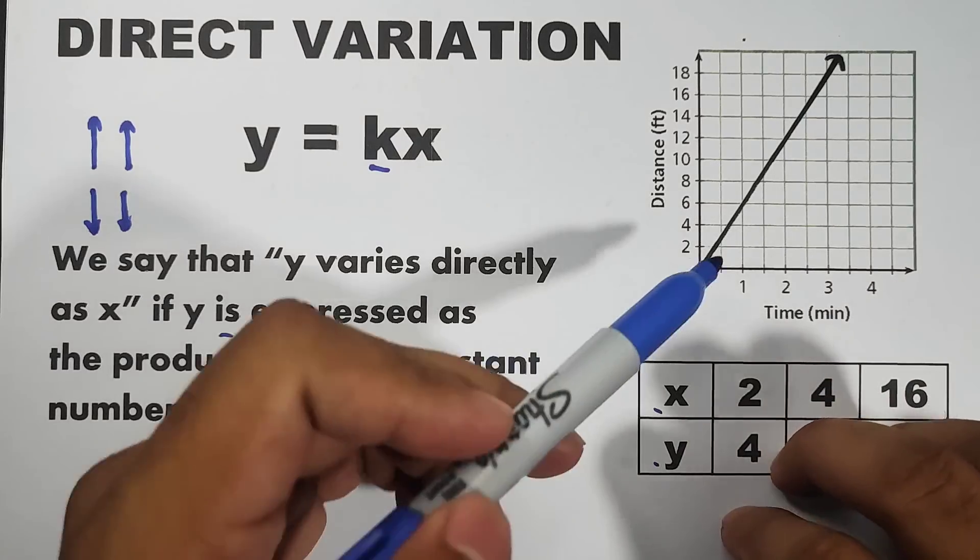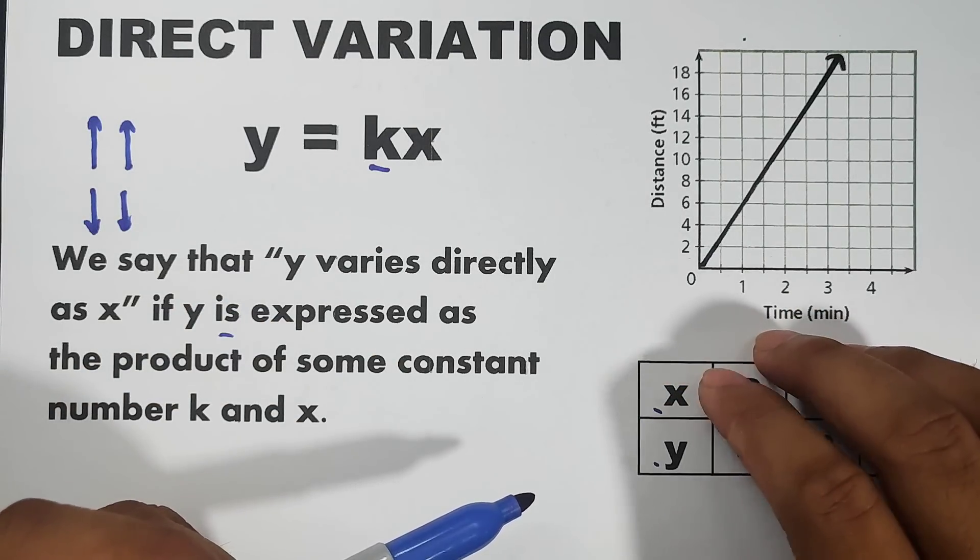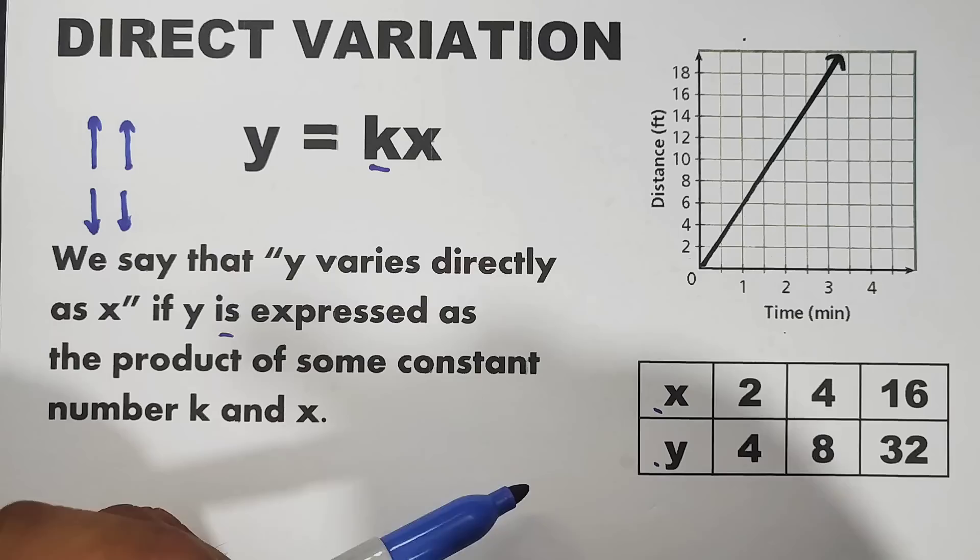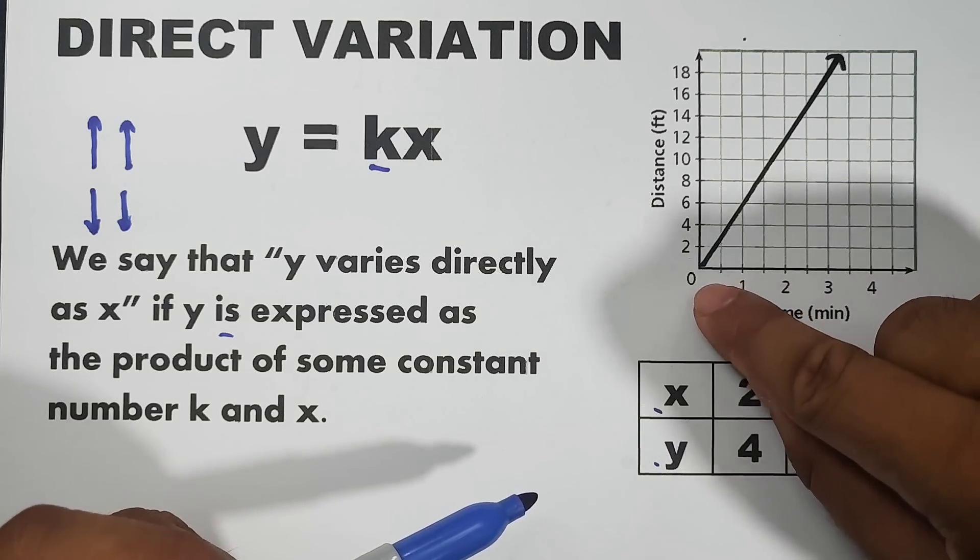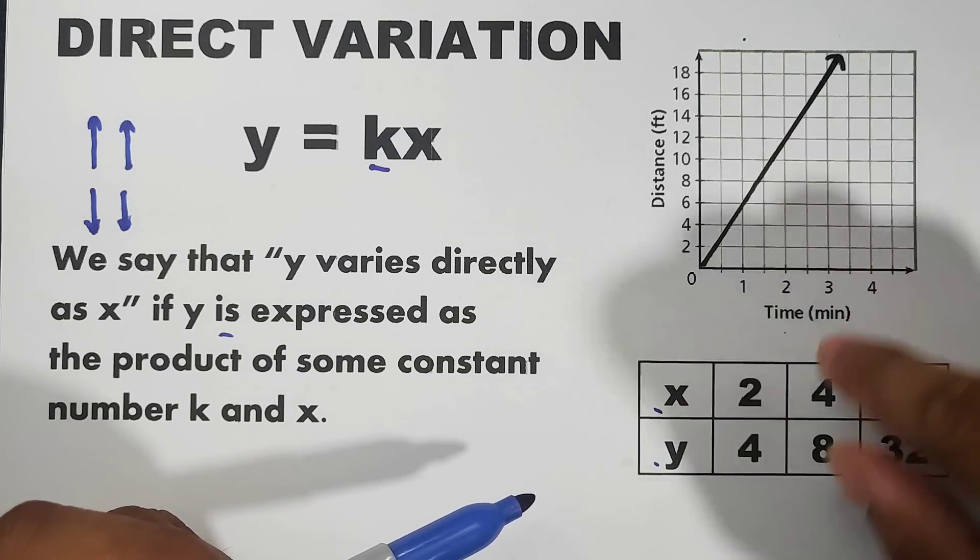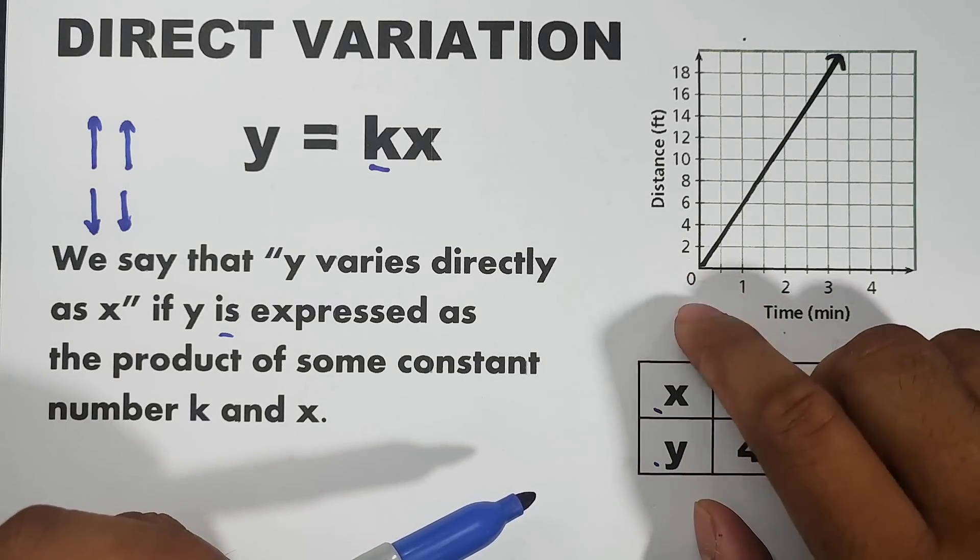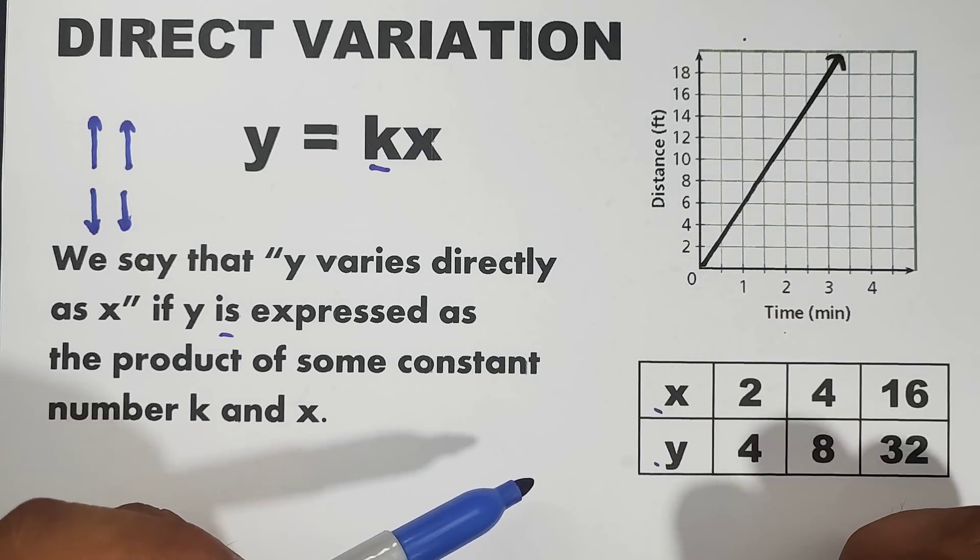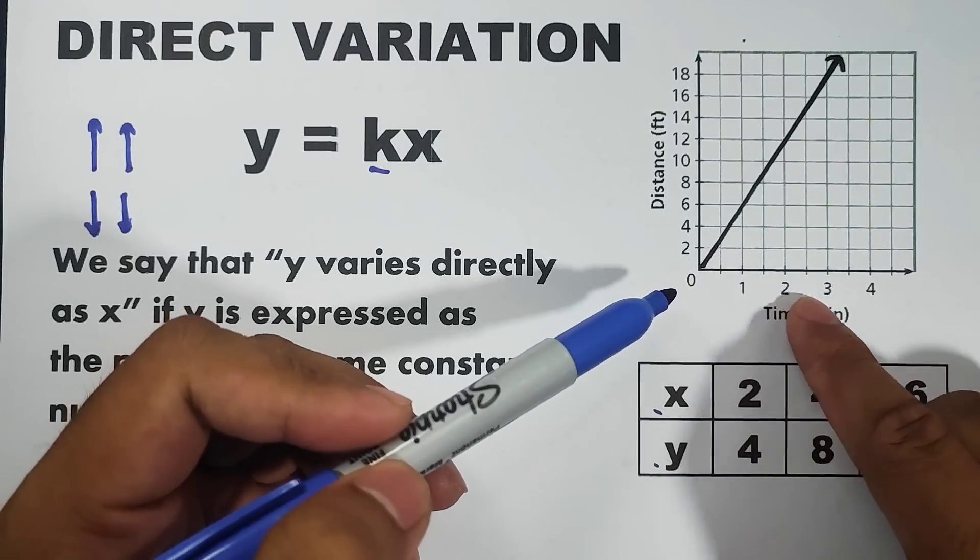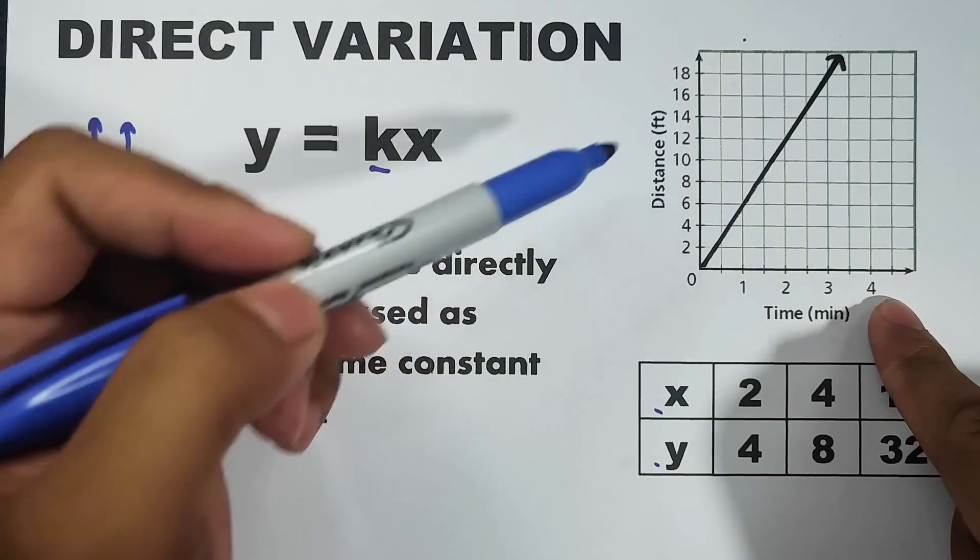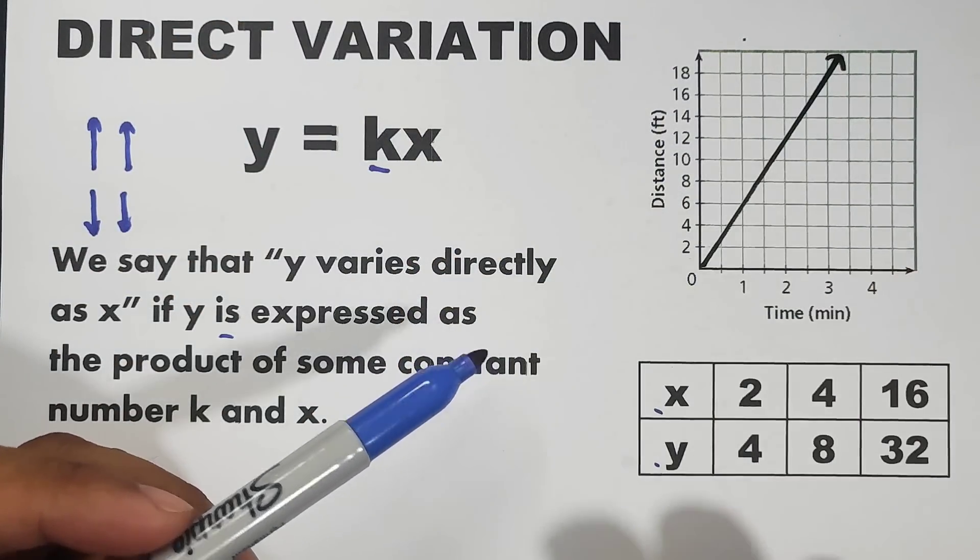Another thing, what we have here is a given graph. This is a graph of direct variation. The first characteristic of the graph of a direct variation is that it represents a straight line. Second, it passes through the origin or the center of the x and y-axis. Pangalawa, kung mapansin niyo, as the value of x increases, the value of y also increases. So, definitely, this one is an example of direct variation.